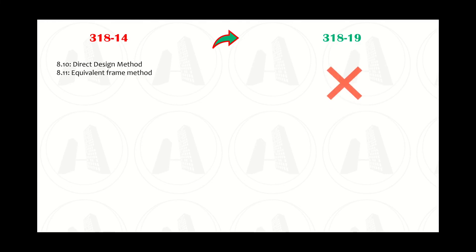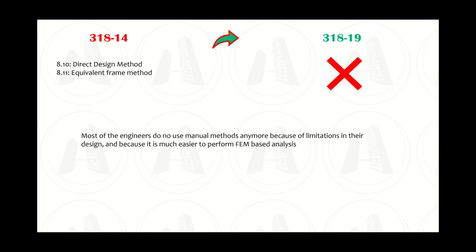Another major change in the 2019 version of ACI 318 is the removal of the direct design and equivalent frame methods for the design of two-way slab panels. Most engineers no longer prefer these manual methods because of their limitations, and because it is much easier to perform FEM-based analysis.